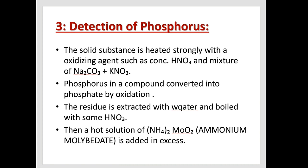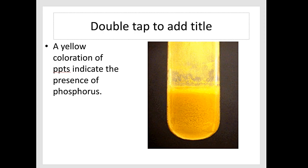The residue is extracted with water and boiled with HNO₃. At the end, we add a hot solution of ammonium molybdate — (NH₄)₂MoO₄ — in excess. Adding ammonium molybdate in excess produces yellow precipitates. A yellow coloration or precipitates indicate the presence of phosphorus. Yellow precipitates appearing in the test tube confirm that the compound contains phosphorus.